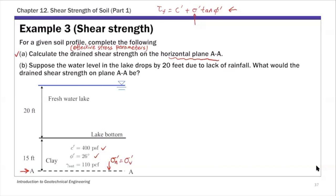In Chapter 9, we talked about how to calculate the vertical effective stress. For Part A, the key is to find sigma n prime, or simply sigma prime — the vertical effective stress, which is the normal stress on the AA plane.